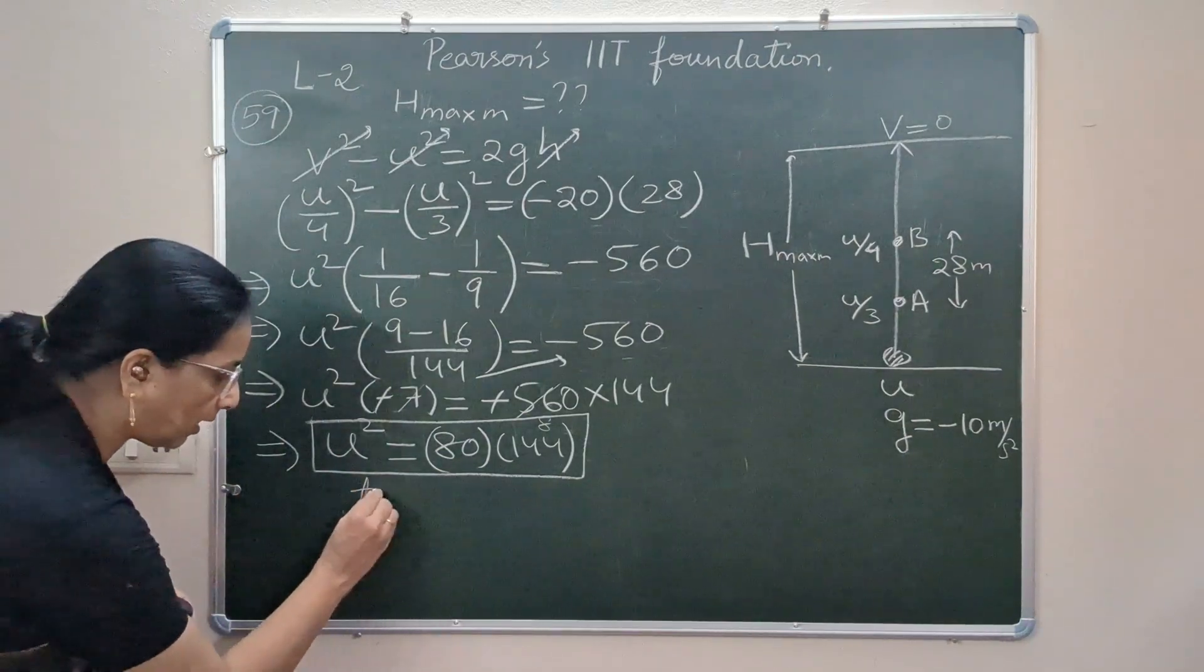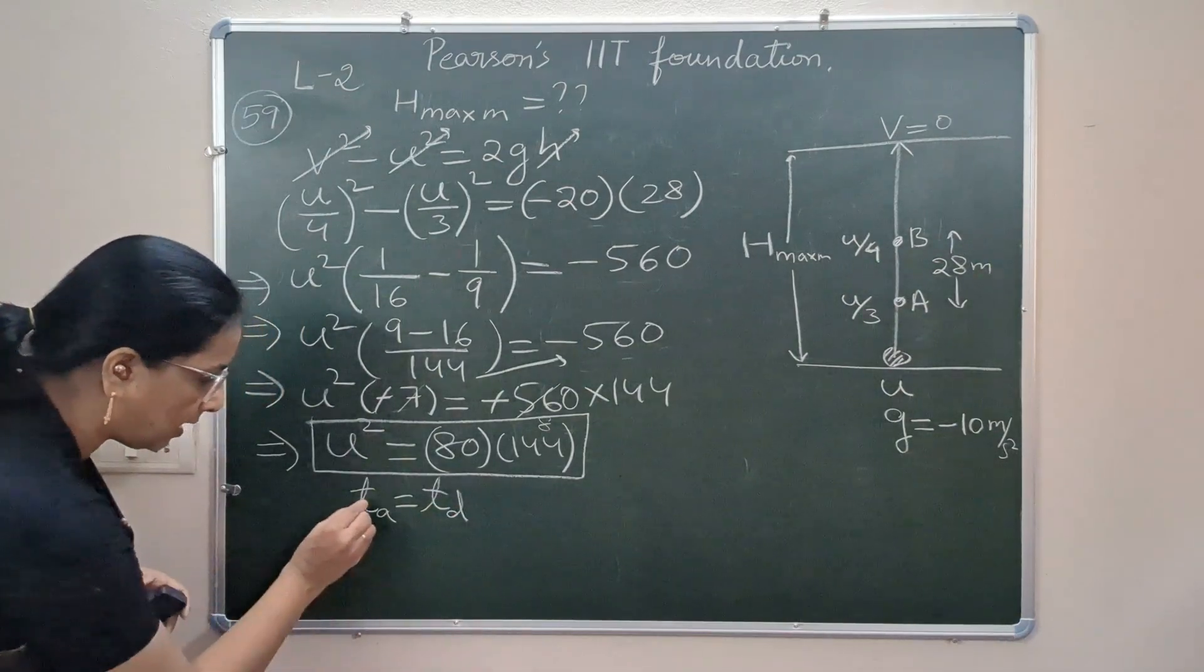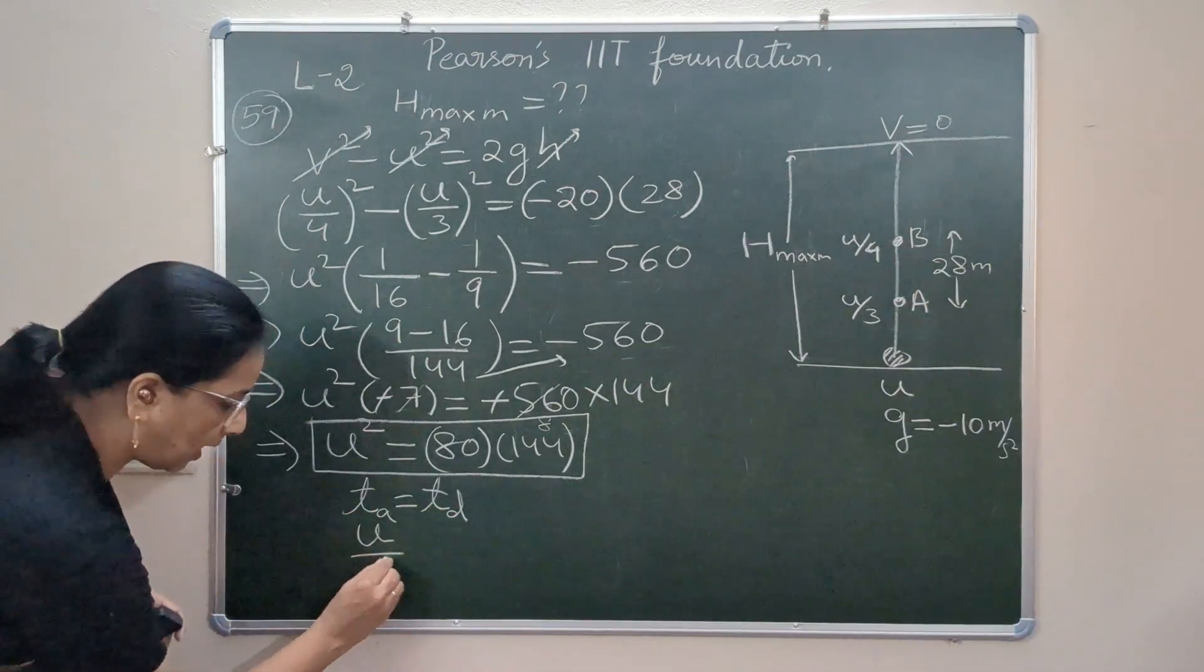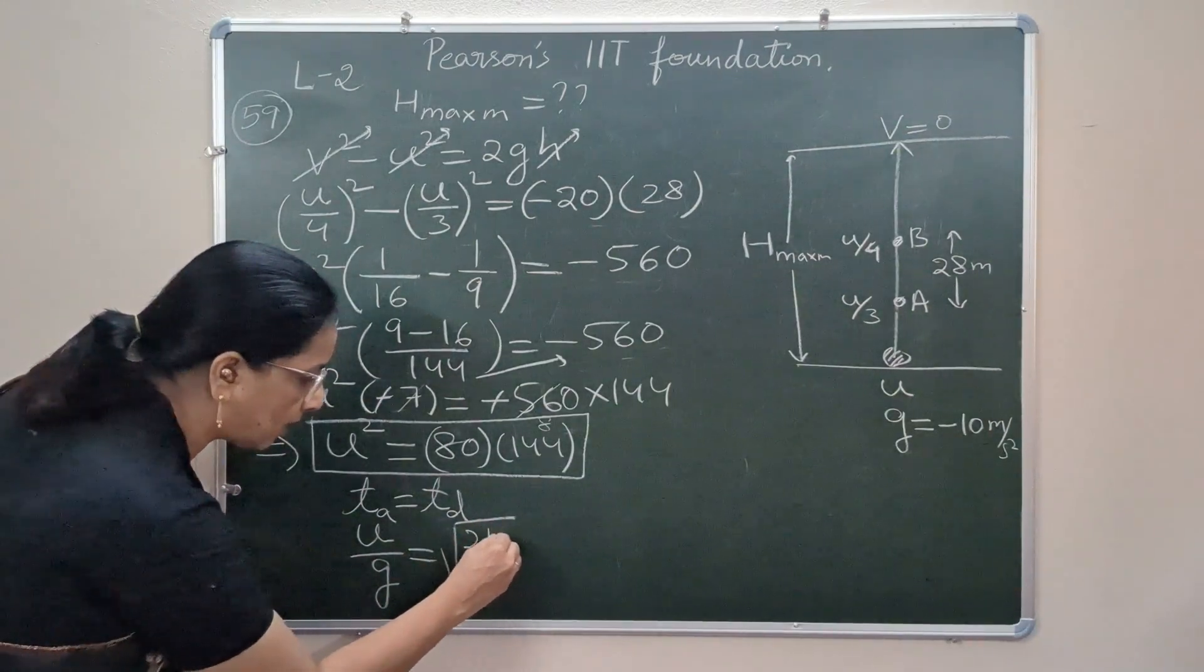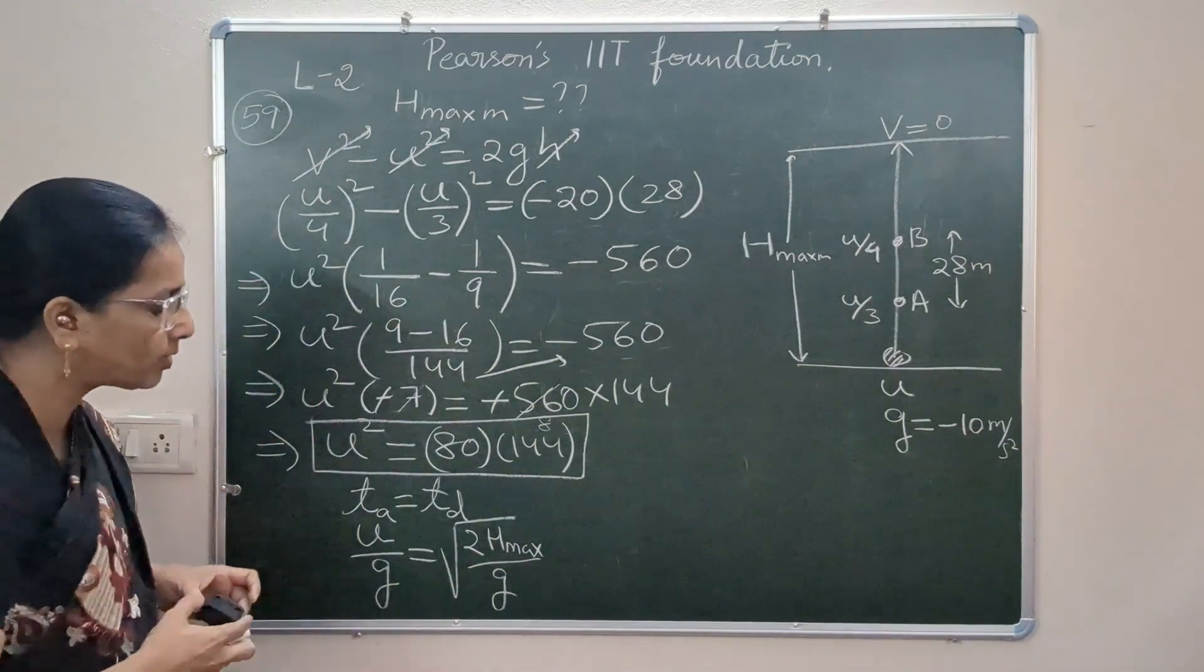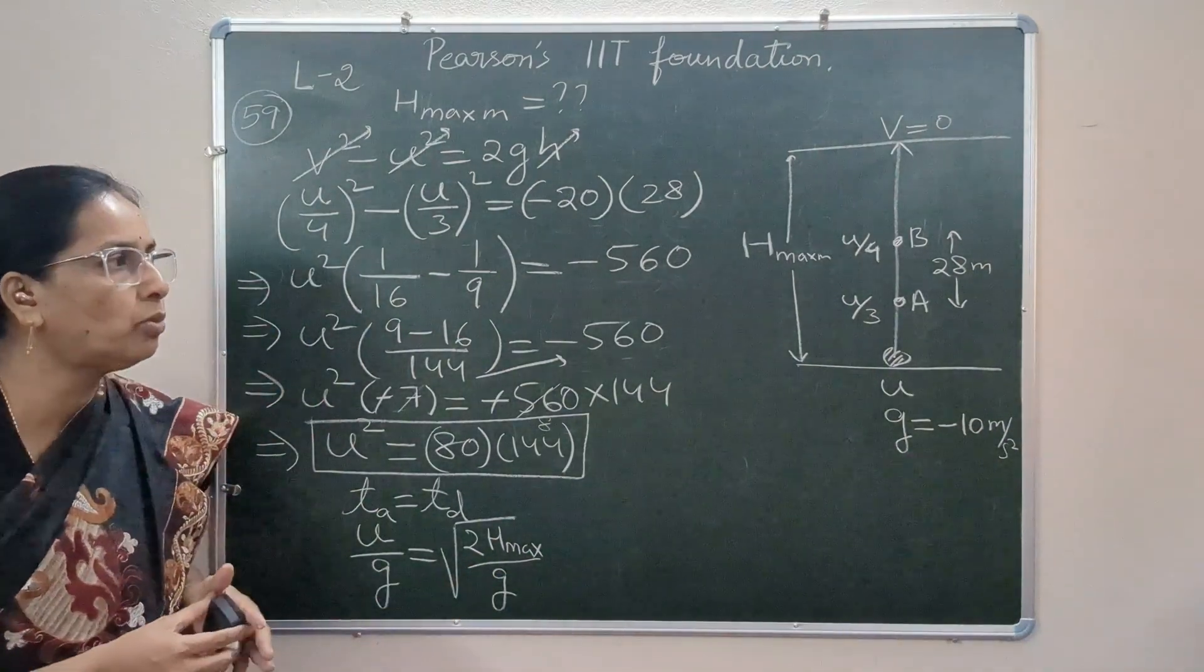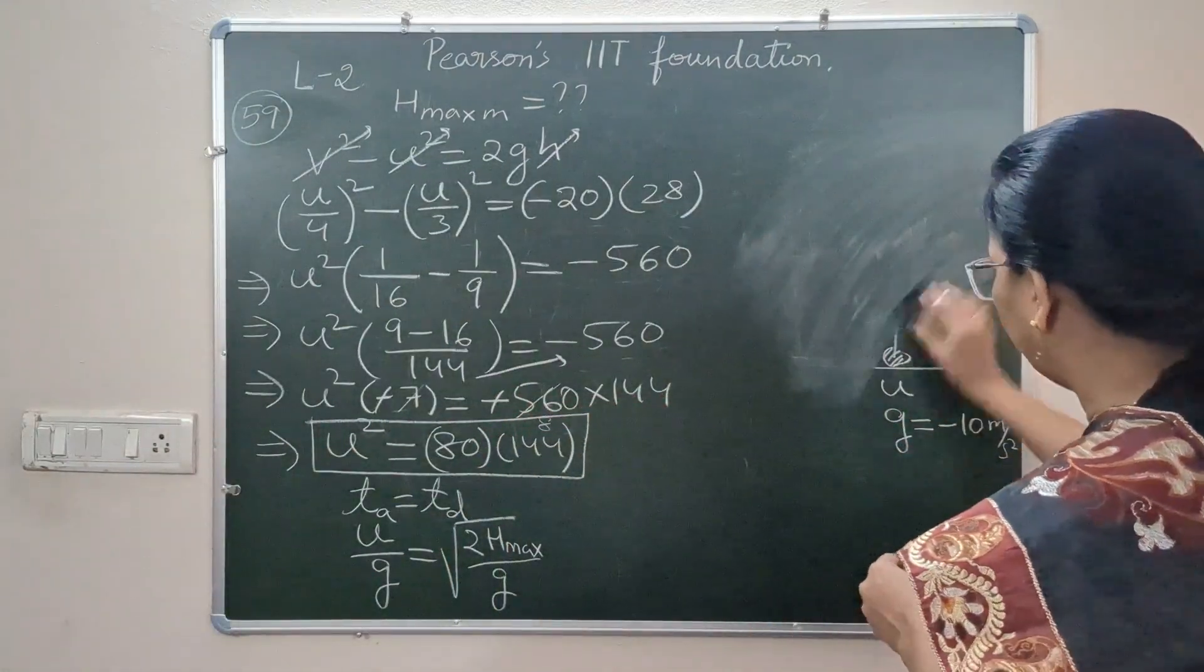Since we know that time of ascent is always equal to time of descent. Time of ascent we calculate as u/g, time of descent we calculate as √(2h_max/g). Now squaring on both sides to remove the root, so I will make use of this space to solve further.